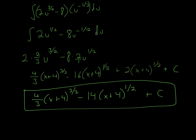Bringing everything together, we have 4/3(x+4)^(3/2) minus 16(x+4)^(1/2) plus 2(x+4)^(1/2). Remember TADC — they'll count off if you don't have it. Since both terms have (x+4)^(1/2), we can simplify: negative 16 plus 2 is negative 14, giving 4/3(x+4)^(3/2) minus 14(x+4)^(1/2) + C. Remember the plus C!